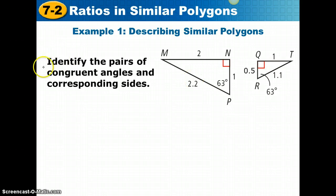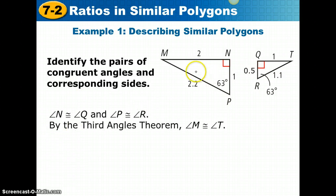In example 1, we are going to identify the pairs of congruent angles and corresponding sides. Remember, corresponding angles of similar polygons must be congruent. Here we can see that angle N is congruent to angle Q. They're both right angles, so they must be congruent.